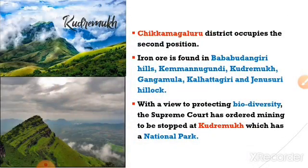After Ballari, Chikamagalur occupies second position in iron ore production in our state. In Chikamagalur, the iron ore mines are at Baba Budangiri Hills, Kemangundi, Kudremukh, Gangamul, Kalhatagiri, and Jenisuri hillocks. Among these, Kudremukh has completely stopped iron ore mining because of its biodiversity features.